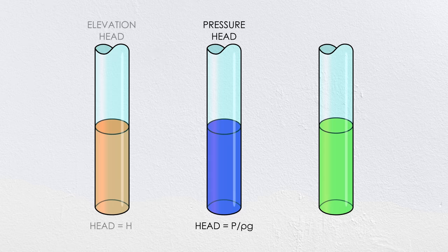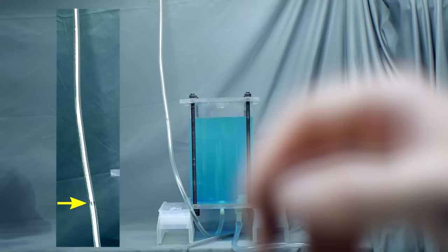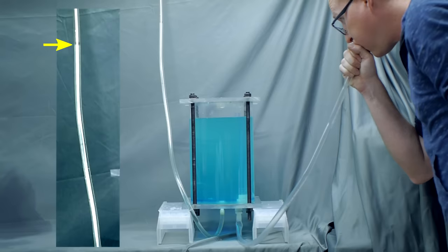The second type of energy is pressure head. In this case, the head is the pressure divided by the gravity times the density of the fluid. So if I close off the top of my tank and add some air pressure, the level in the tube goes up. The new height is the pressure head, the equivalent static column related to the pressure in the tank.